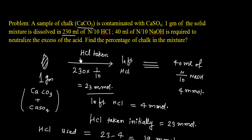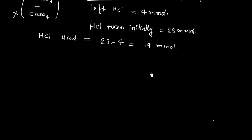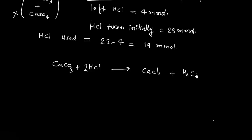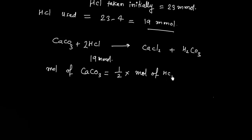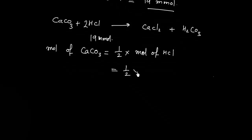HCl reacts with CaCO3 only — it will not react with CaSO4. The reaction is: CaCO3 + 2HCl → CaCl2 + H2CO3. Moles of HCl used = 19 millimoles. Since 2 moles of HCl react with 1 mole of CaCO3, moles of CaCO3 = (1/2) × 19 = 9.5 millimoles.